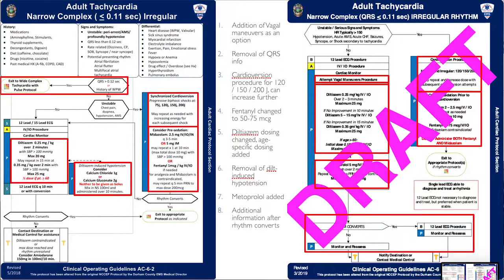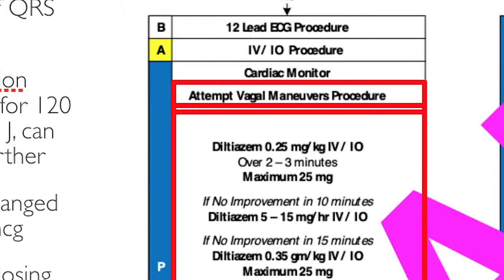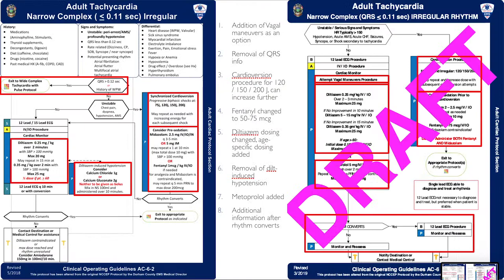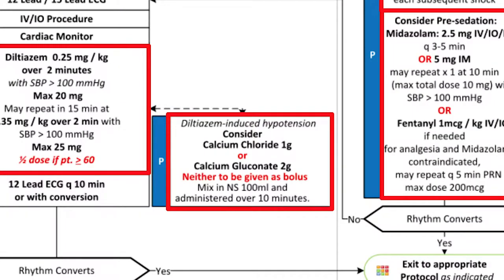Adult tachycardia, narrow complex irregular rhythm. Addition of vagal maneuvers as an option to match with the state protocols. Removal of QRS information since that's already written at the top of the protocol. We've added specific voltages for the cardioversion procedure. Fentanyl dosing changed to 50 to 75, similar to the prior protocol. The same diltiazem dosing as the previous protocol, and removal of the dilt-induced hypotension.